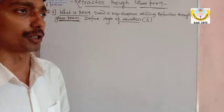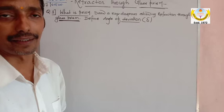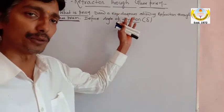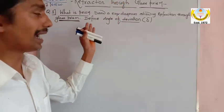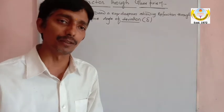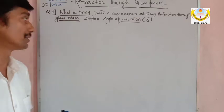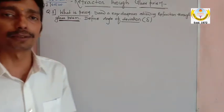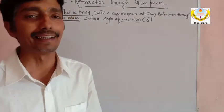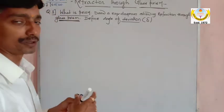Let's begin with the first question: what is a prism? We have to draw a diagram showing refraction through a glass prism. That diagram you have to use for all questions based on this topic. We also need to define angle of deviation (delta) and angle of minimum deviation. To discuss what is a prism, let us take the 3D diagram.